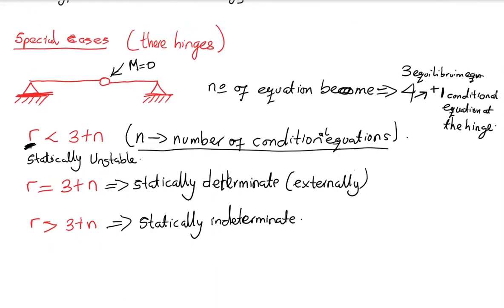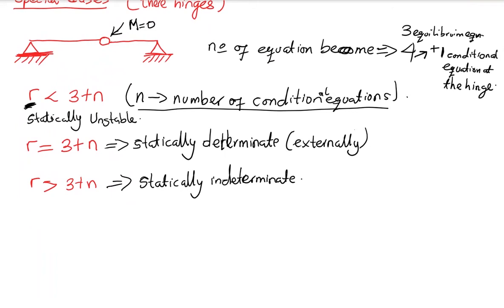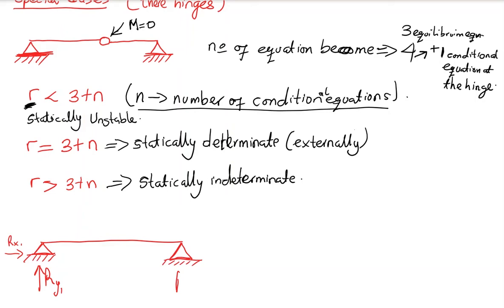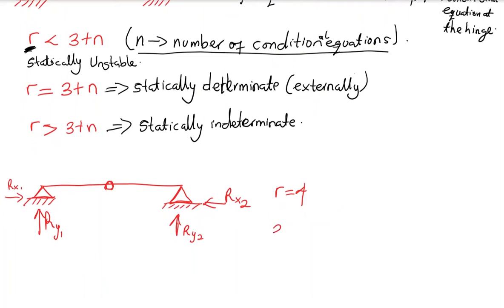Let's look at some examples. Starting with the first one: we have a pin support, which gives us two reactions Ry1 and Rx1. We also have another pin support with reactions Ry2 and Rx2, and we have a hinge. So r becomes equal to four reaction forces. We have three equilibrium equations plus one conditional equation due to this hinge.